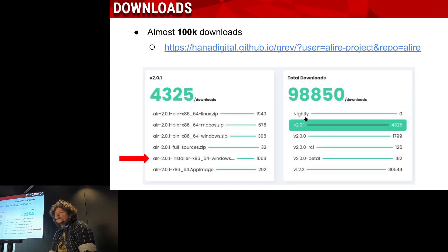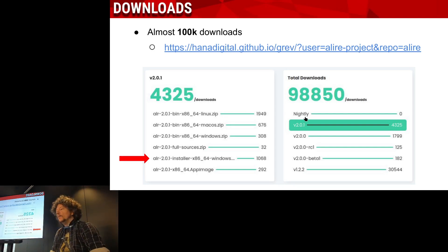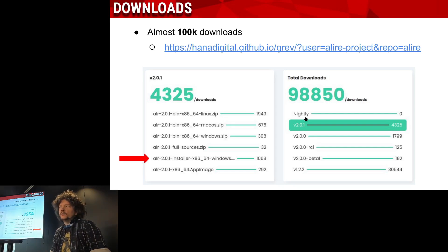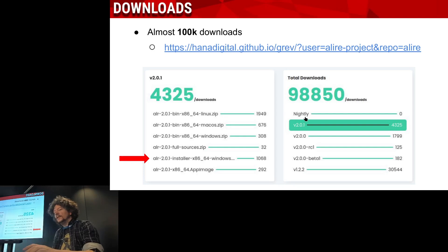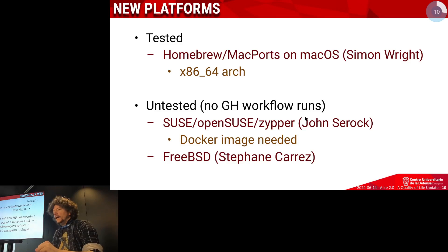In regard to usage, if we go to the statistics on GitHub, we see almost 100,000 downloads, but this is overly optimistic because we use those releases in internal testing, which inflates the numbers. However, the installer for Windows we never download ourselves, so those are real downloads by users — and we see quite a number, which is a good indication of interest.